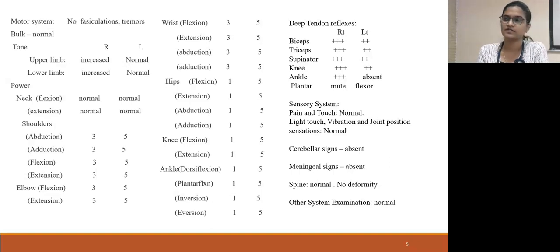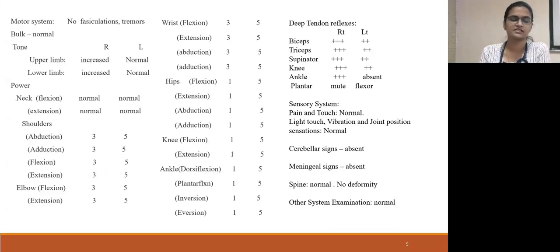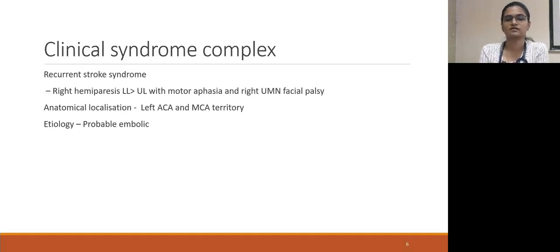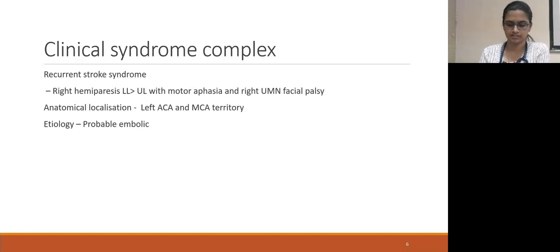In summary, he is a young 37-year-old farmer with no known prior comorbidities, but recently diagnosed with hepatitis B and diabetes, and with a past history of stroke just one month back, who presented again with a recurrent stroke. It is a recurrent stroke syndrome with right hemiparesis, lower limb more than upper limb, with motor aphasia and right upper motor neuron facial palsy. Anatomical localization was to the left ACA and MCA territory — probable embolic stroke since it is recurrent.